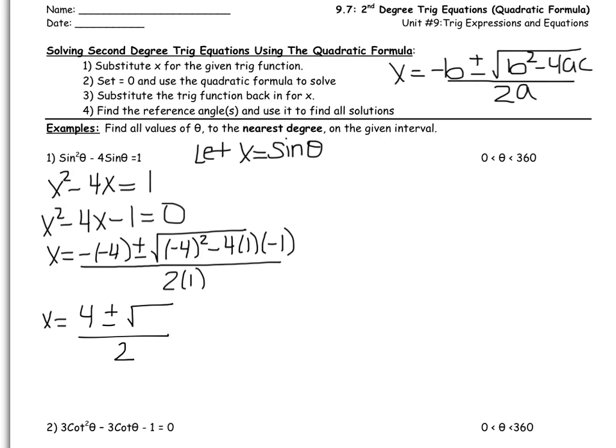Now is a good time to grab your calculator, so hit pause if you need time to get it. I'd like you to plug in negative 4 squared minus 4 times 1 times negative 1 — we want this piece without the radical in the calculator. So type: parenthesis negative 4, close parenthesis, squared, minus 4, open parenthesis 1, close it, open parenthesis negative 1, close it, enter. You should get 20.